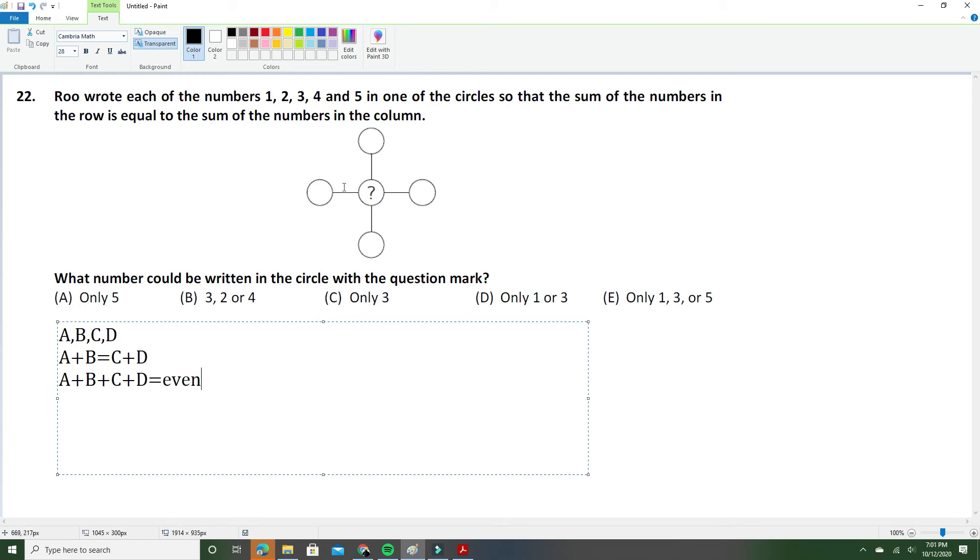For example, we'll have 2 + 3. Two plus three is equal to 5. And now let's have an odd plus an odd, so then we would have 2 + 3 would be equal to 1 + 5, which is not true.